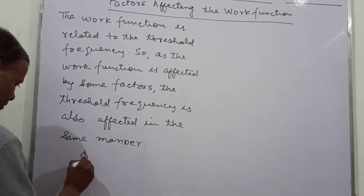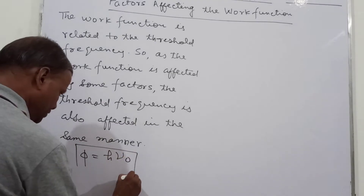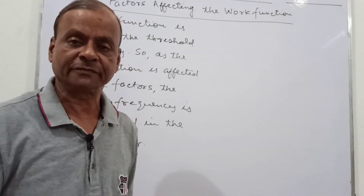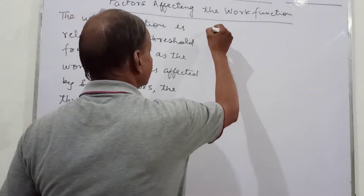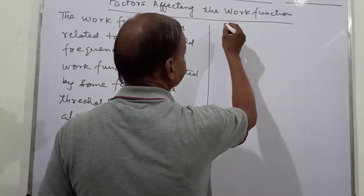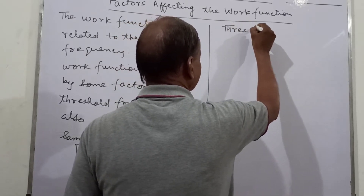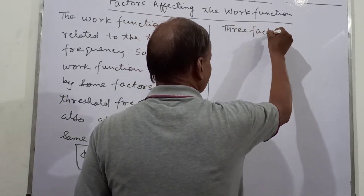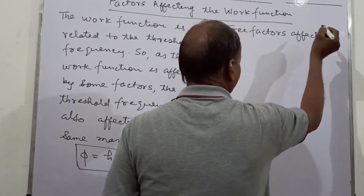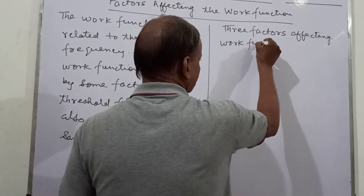The work function phi is equal to h times nu — this is the relation between work function and threshold frequency. So there are three factors which affect the work function.